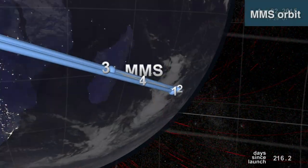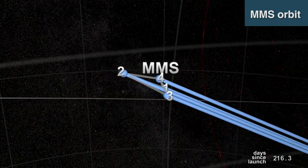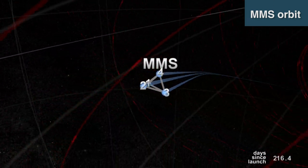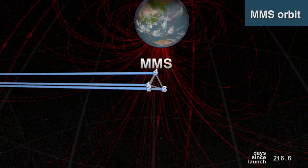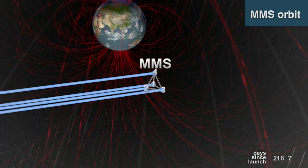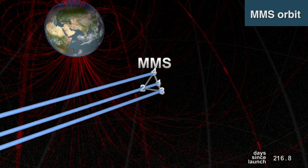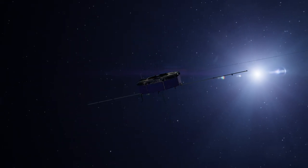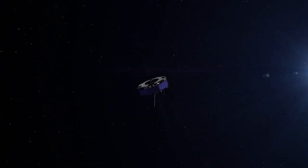This is just the start. In its first year, MMS made more than 4,000 trips through the magnetic boundaries around Earth, each time gathering information about the way the magnetic fields and particles move and interact in our space environment. Crucial information as we make plans to explore far beyond our home planet.